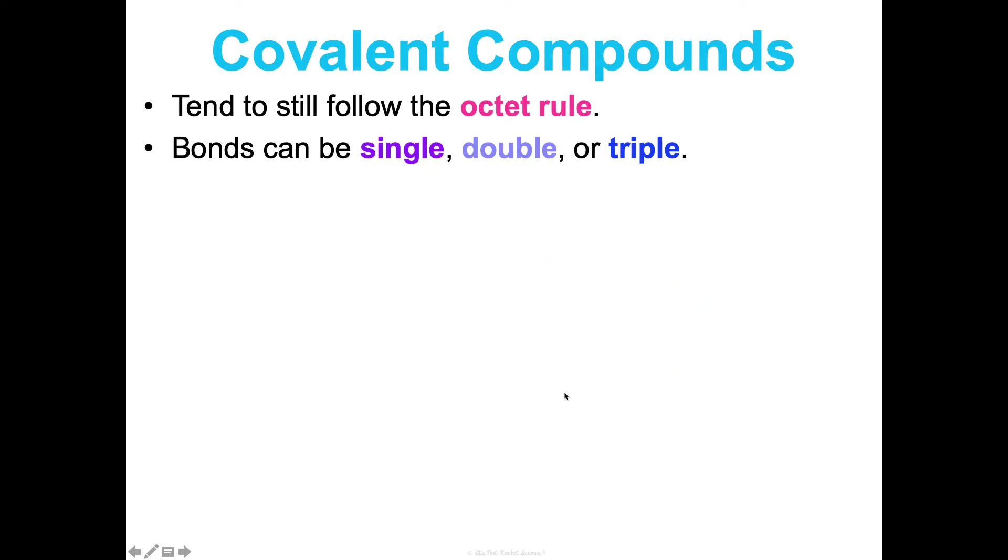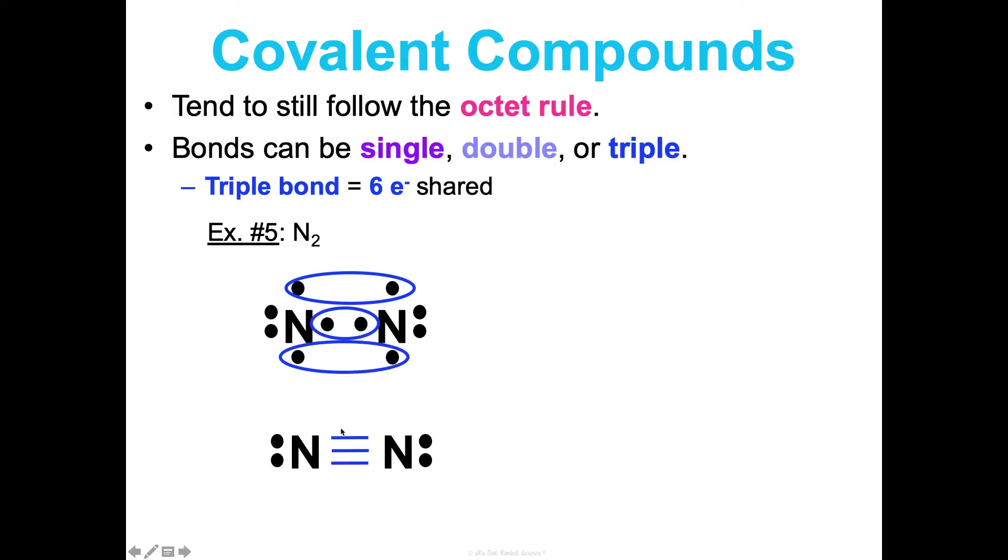A triple bond is where six electrons are shared. We see this when we look at N2: they share one pair, two pairs, three pairs, six electrons total, and we get that triple bond there.